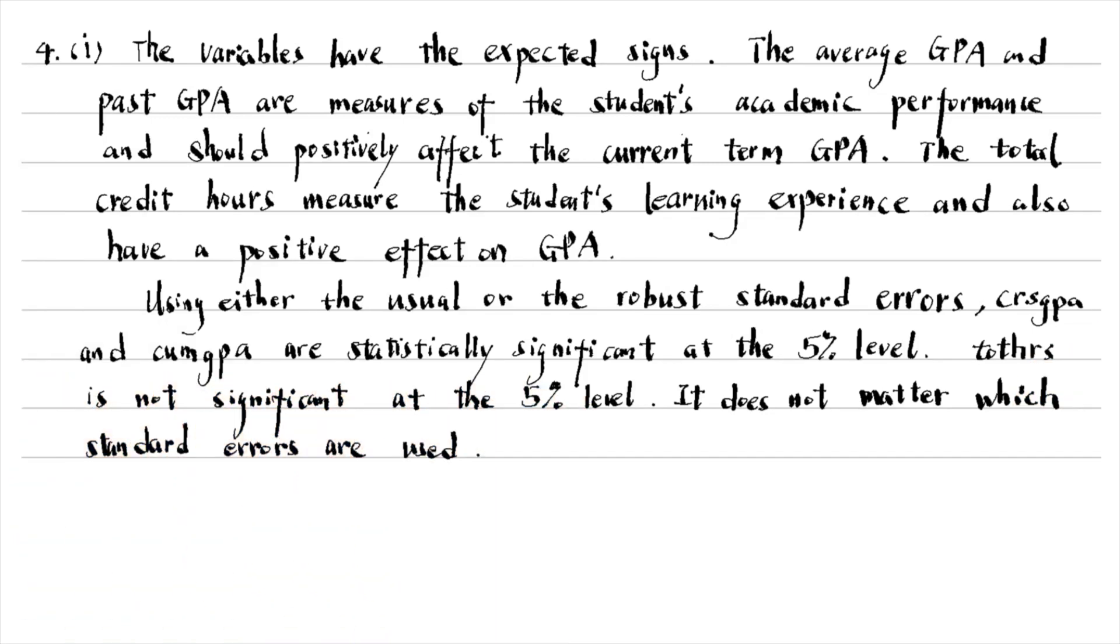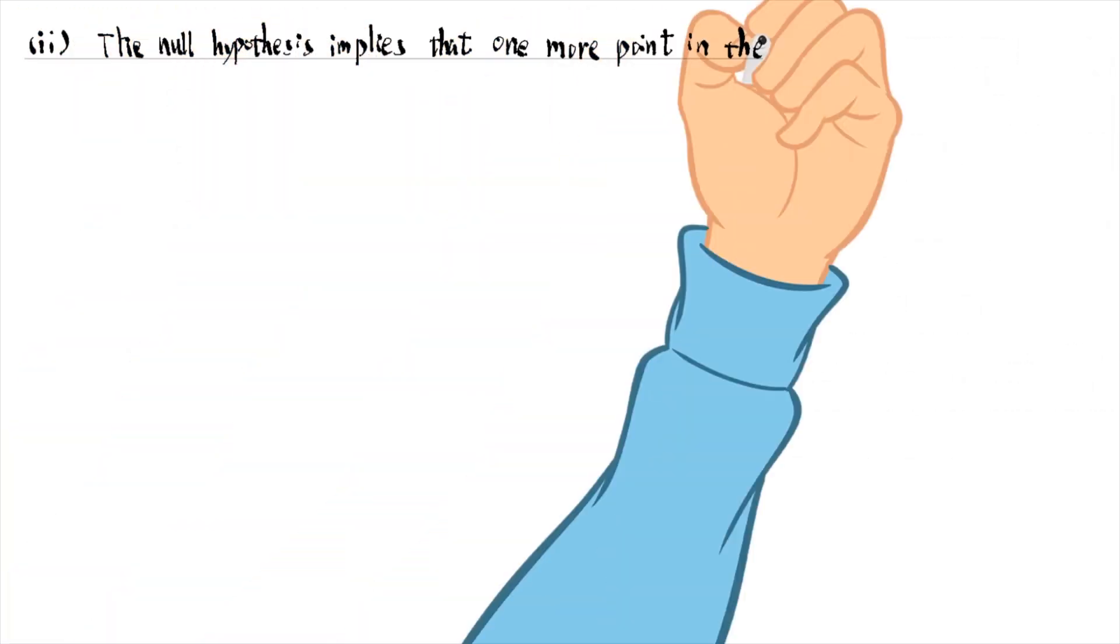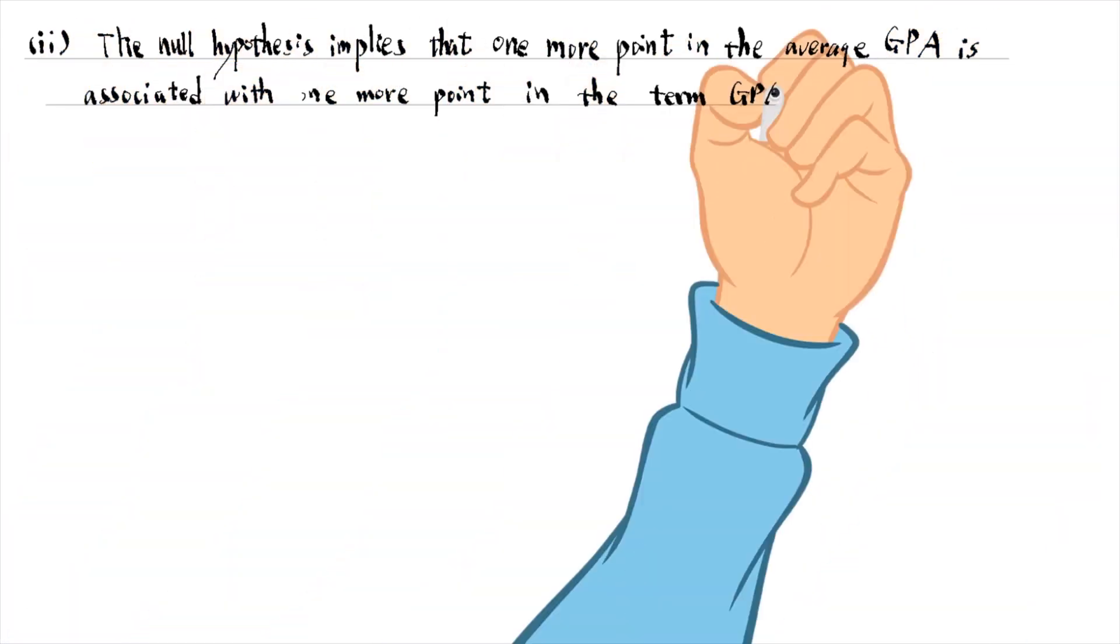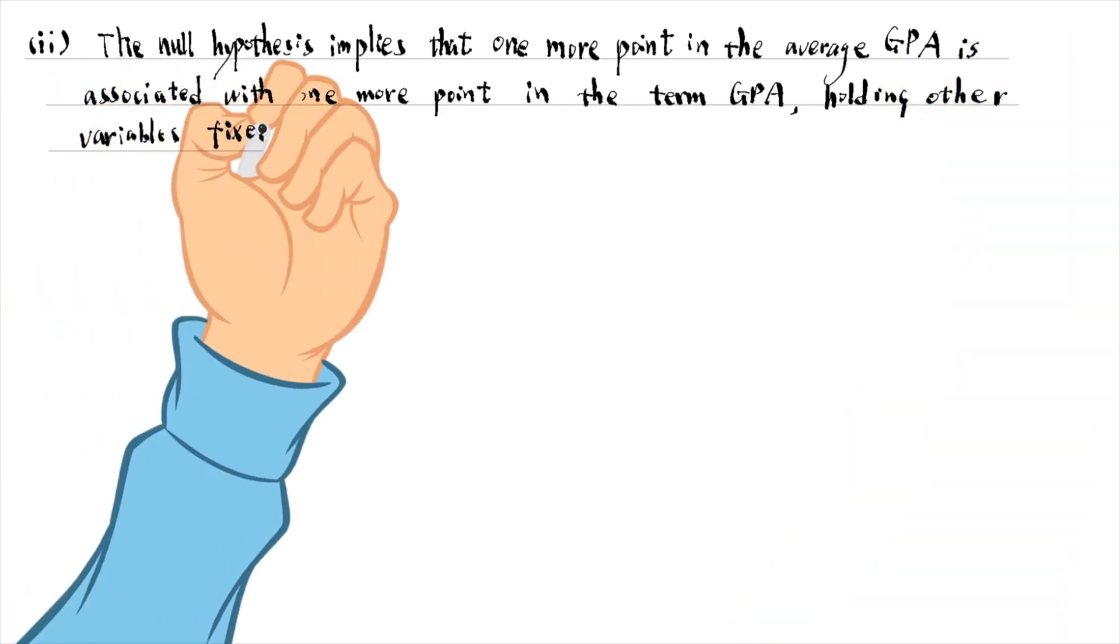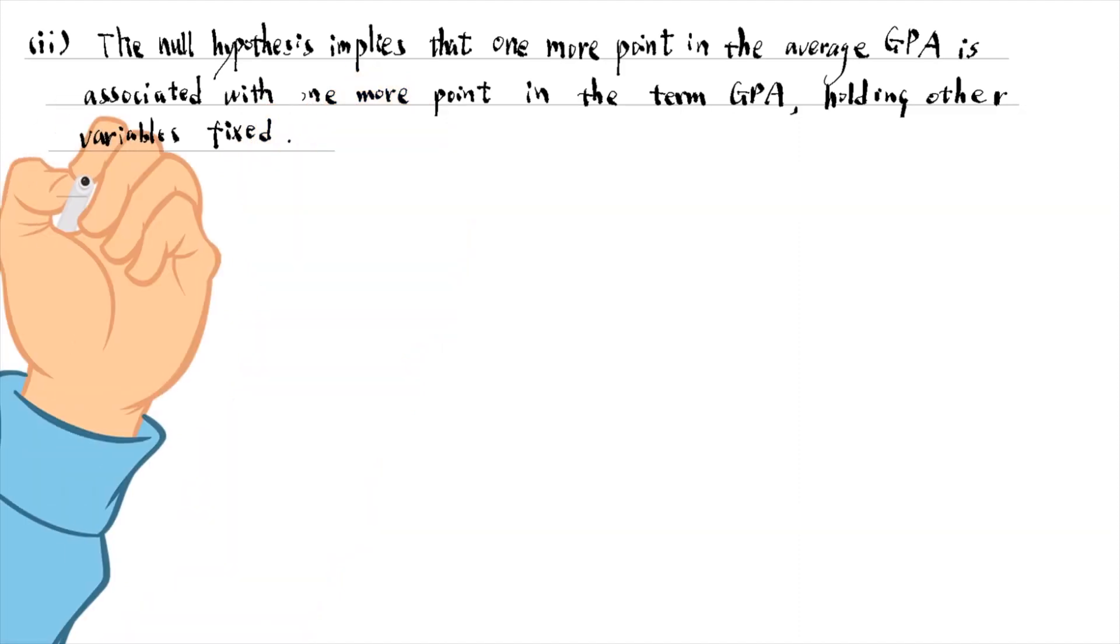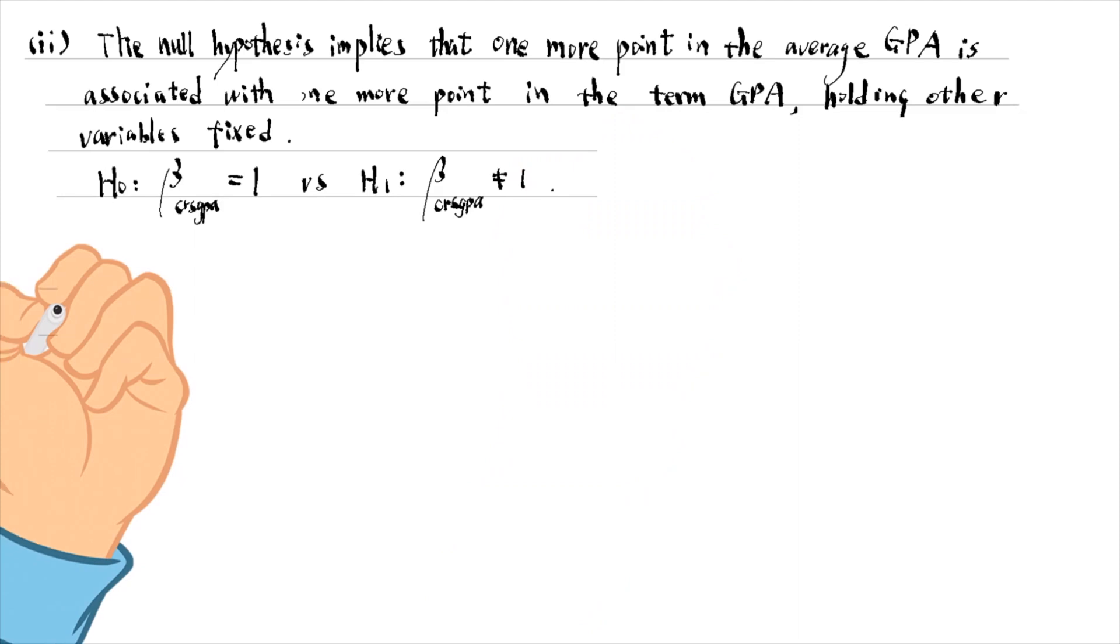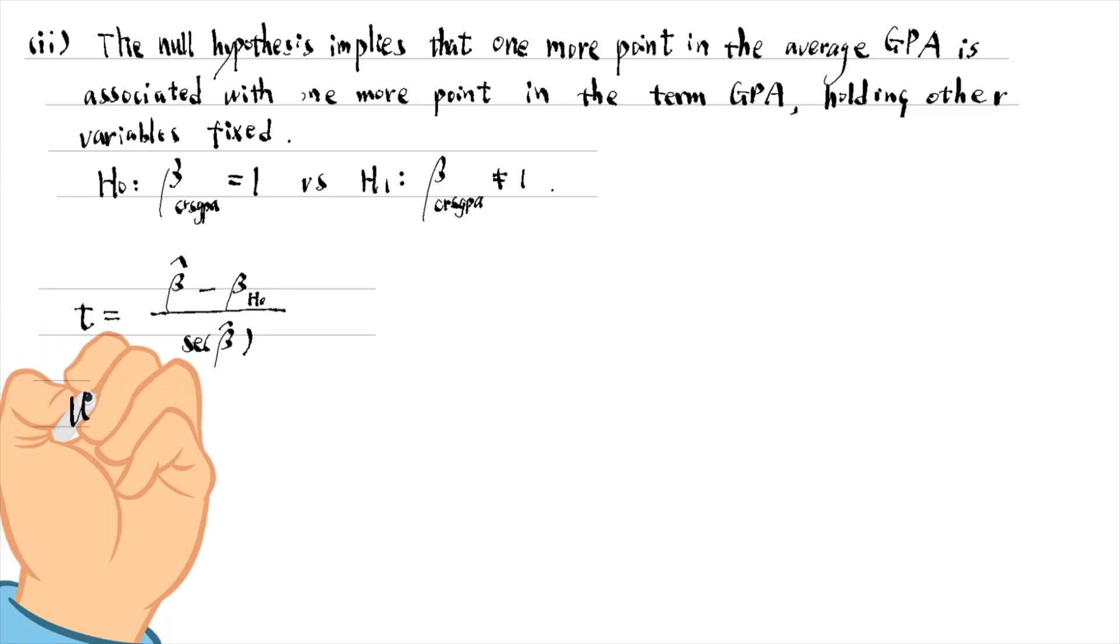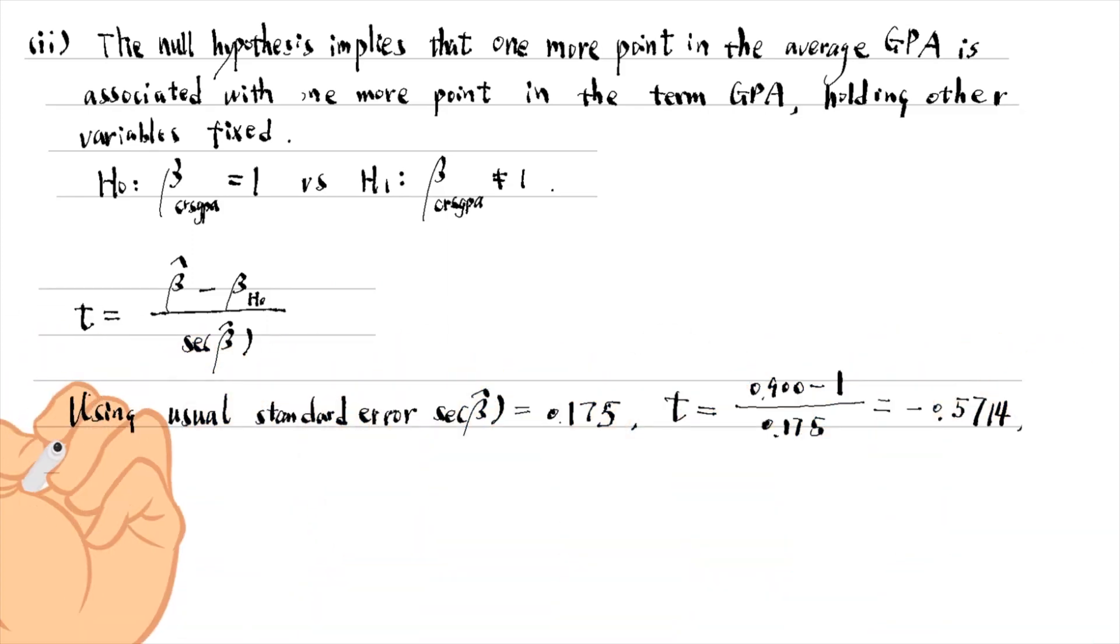In part 2, the null hypothesis implies that one more point in the average GPA is associated with one more point in the term GPA, holding other variables in the model fixed. If we use the usual standard error, the t-statistic equals minus 0.57, and its p-value against a two-sided alternative is 0.57.